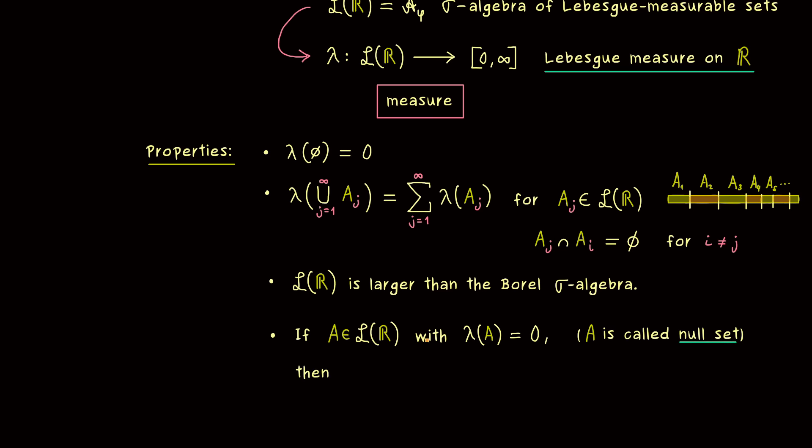However, for such a null set, it turns out that every subset is also a null set. So maybe this is not so surprising, because each subset B in A should be smaller or equal in length. And obviously 0 is already the smallest length we can have. Indeed, the whole claim here is a little bit subtle, because it just means that a subset is also measurable.